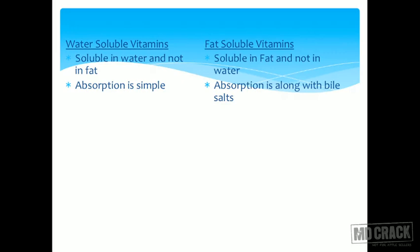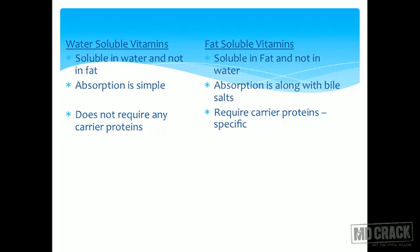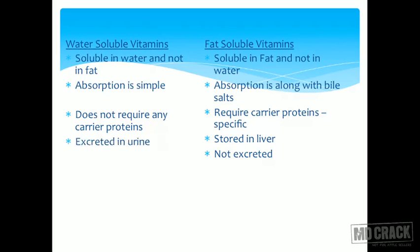Fat-soluble vitamins must travel in an aqueous environment and therefore require carrier proteins. For example, vitamin A requires retinol-binding protein — each fat-soluble vitamin has a specific globulin protein responsible for its transport. Water-soluble vitamins generally do not require carrier proteins, with vitamin B12 being the exception. Fat-soluble vitamins are stored in the liver, while water-soluble vitamins — being water-soluble — are excreted when in excess rather than stored.